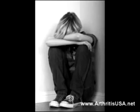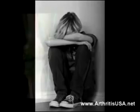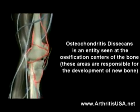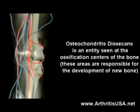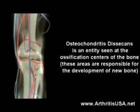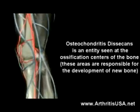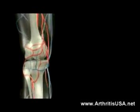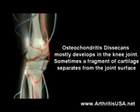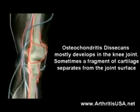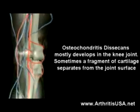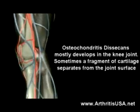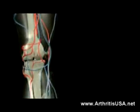Osteochondrosis desiccans is typically seen in young males. It is an entity seen at the ossification centers of the bone — areas responsible for the development of new bone. The condition mostly develops in the knee joint, and sometimes a fragment of cartilage separates from the joint surface.